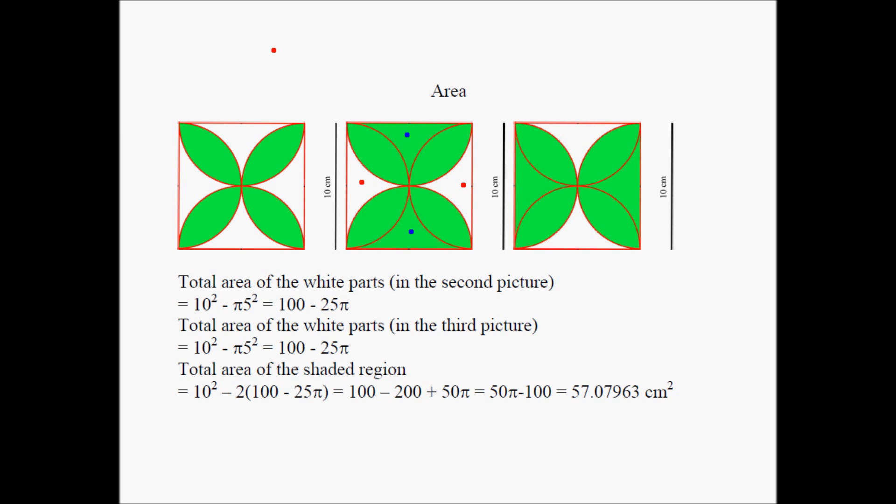And I know the area of a circle is equal to pi times radius squared. I'm going to write pi, and pi is approximately equal to 3.142. That's the formula for the area of a circle.